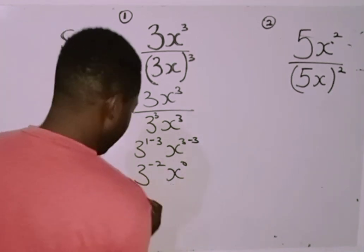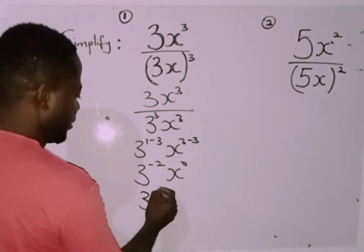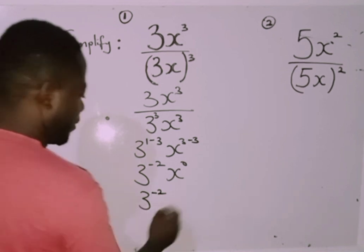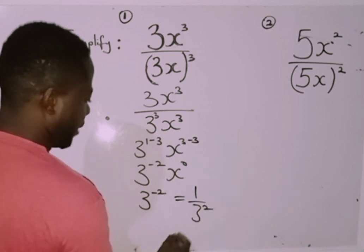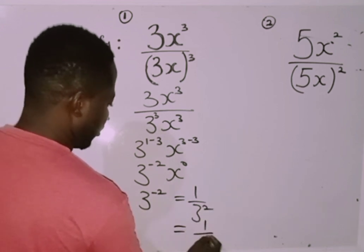Don't forget, anything raised to power 0 is 1, so I'll be having just 3 raised to power minus 2. 3 raised to power minus 2 is the same thing as 1 over 3 raised to power 2, and my final answer is 1 over 9.